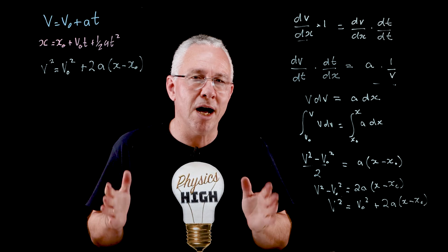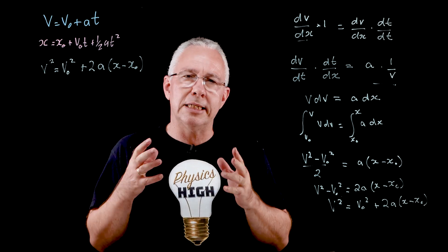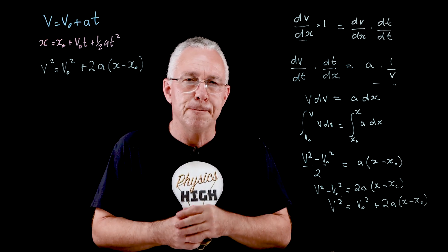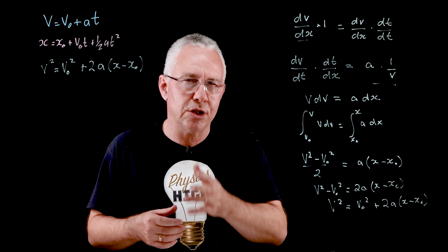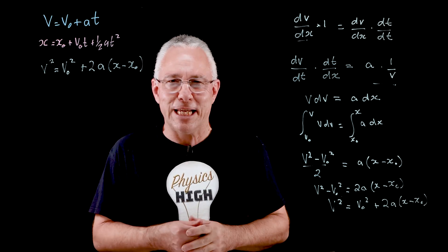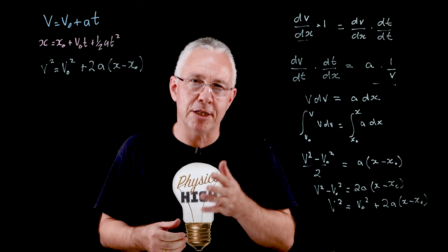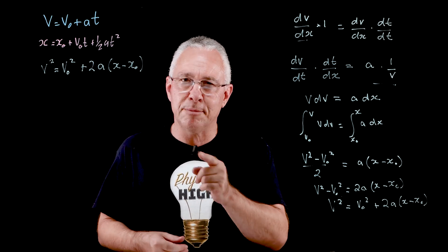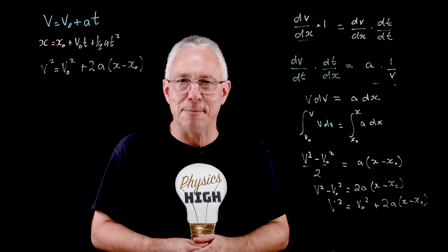So we have derived the three equations of motion using calculus. Remember, all of these situations deal with constant acceleration. But what about situations where the acceleration is not constant — where it is constantly changing? That leads to the concept of jerk, which is in my next video. I hope this has been helpful for you with the calculus of rectilinear motion. Please like, share, and subscribe, and consider buying me a coffee. My name is Paul from Physics High — bye for now.